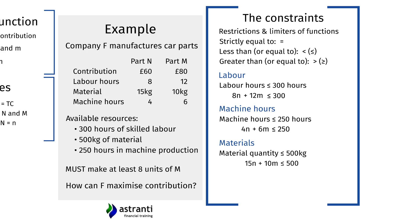So far we've considered constraints that must be less than or equal to a maximum. But how do we express our obligation to fulfil the customer's order for 8 units of Part M? The quantity of M we produce must be greater than or equal to 8. We can produce exactly 8, which fulfils the order, or more — but definitely not fewer.